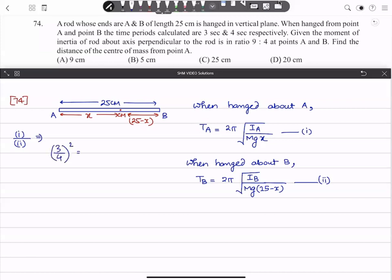This equals IA upon IB, which is 9/4. And the x and 25 minus x will flip - 25 minus x will come up and x will go down.